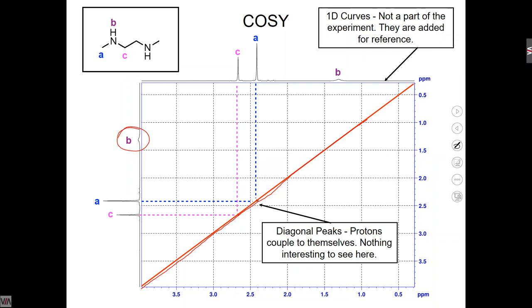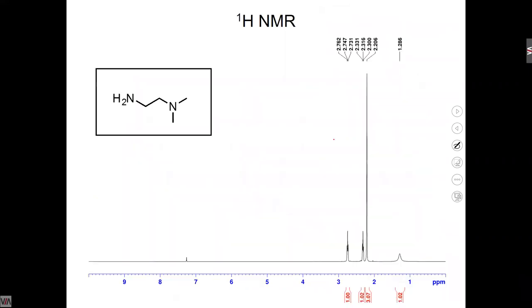But that is one way we can definitively say: signal B must definitely be the nitrogen, because you're not seeing the coupling happening that you're supposed to. We don't even see B coupling with itself — we should see a signal right there. But because it's a nitrogen, that actually tells us that little signal is the nitrogen: the fact that it's not coupling with itself.